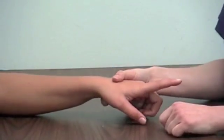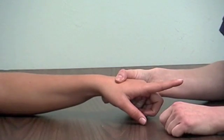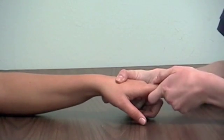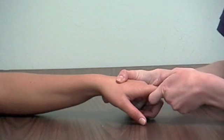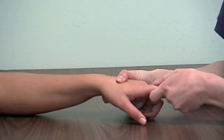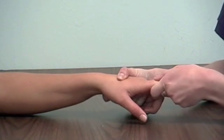For the finger, the examiner should stabilize the patient's hand. Grasp the finger, which should be in extension. Make sure to block flexion of the IP joint and the MCP joint, and apply axial compression.